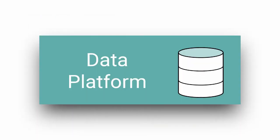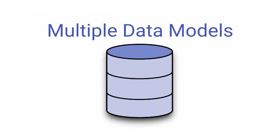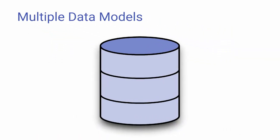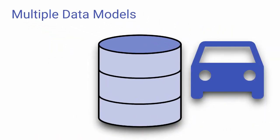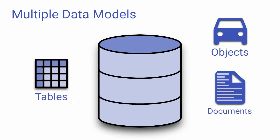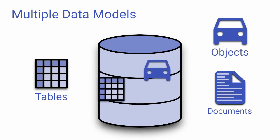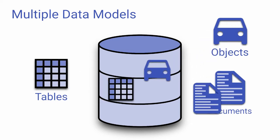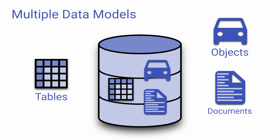As a data platform, Cache supports multiple data models—object, relational, and document. Support for more models is planned for future releases. Developers can use the right model or paradigm alone or in combination with other models for the task they are performing.